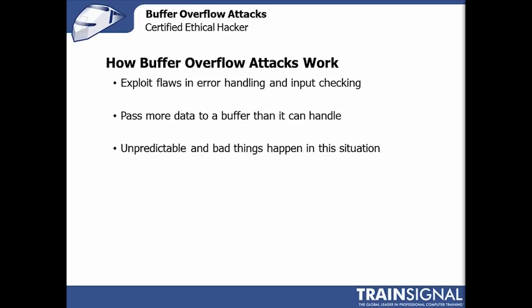In a nutshell, how buffer overflow attacks work is they exploit flaws in code. Bad coding — specifically bad buffer handling, bad input handling, and bad networking — can allow certain types of code to fill up a buffer, fill up a space in memory, fill up a part of a computer that can't handle that much data, sending way too much data to a specific point on the computer in a process that can't handle it.